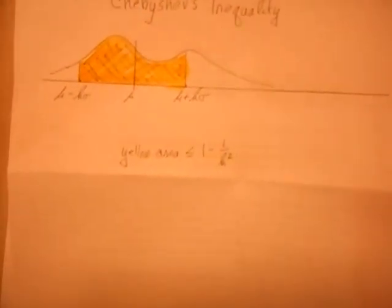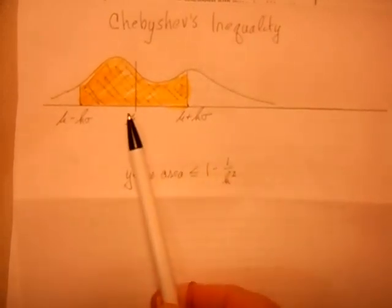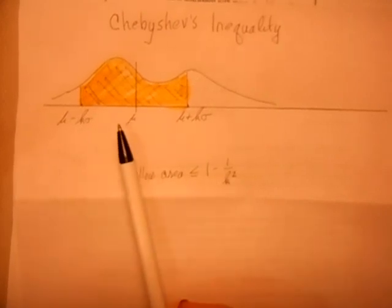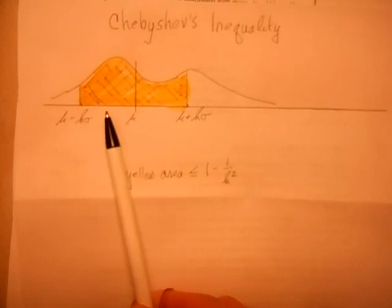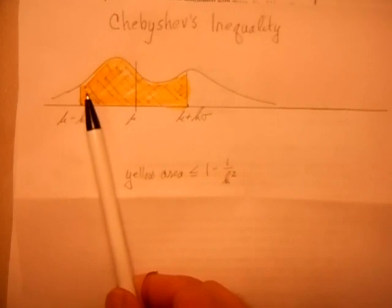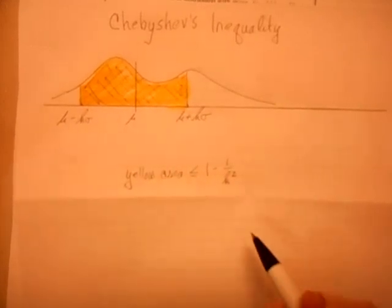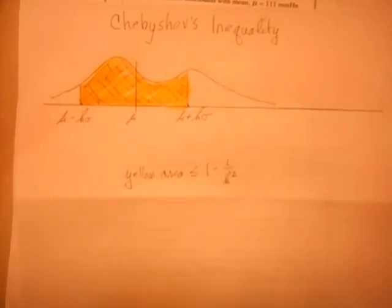The advantage of Chebyshev's theorem is that it works for any distribution — no matter what distribution you have. It could be bimodal, it could be skewed badly to one side or the other — it doesn't matter. If you know the mean and the standard deviation, then for a number of standard deviations k greater than one, the proportion of the population within k standard deviations of the mean is always going to be at least 1 minus 1 over k squared. That k must be bigger than one — it doesn't work if it's less than one. But this rule gives us powerful tools.